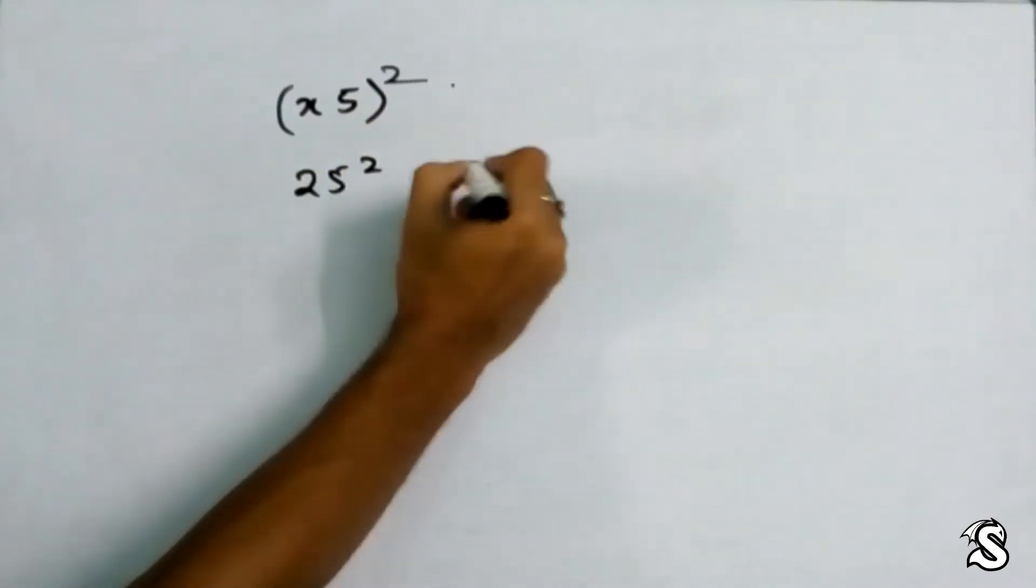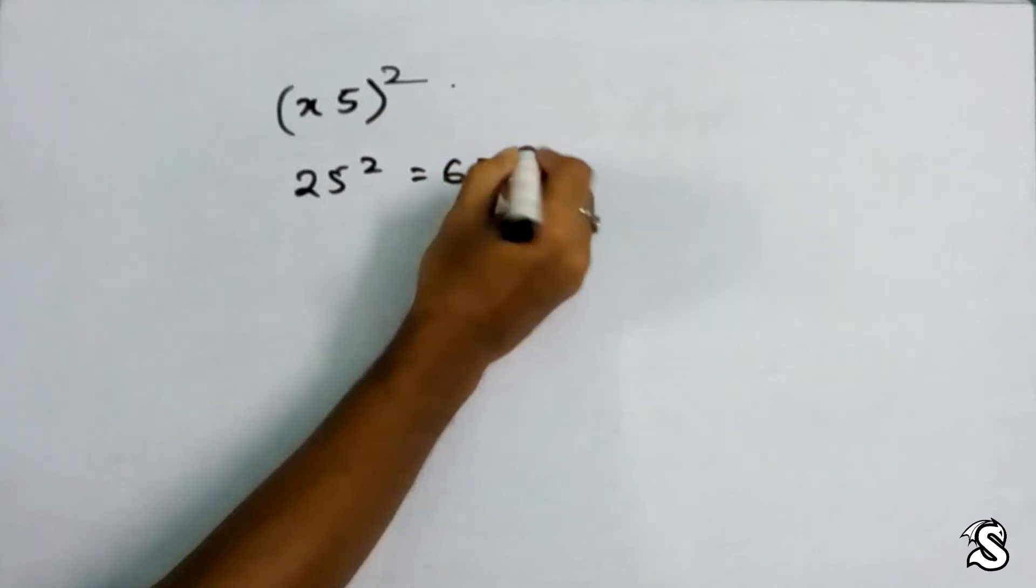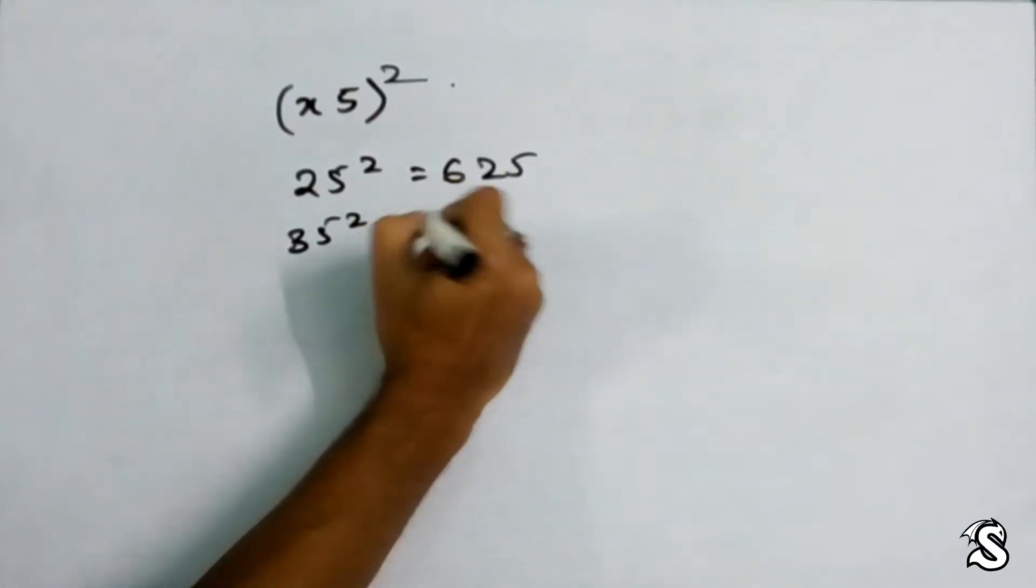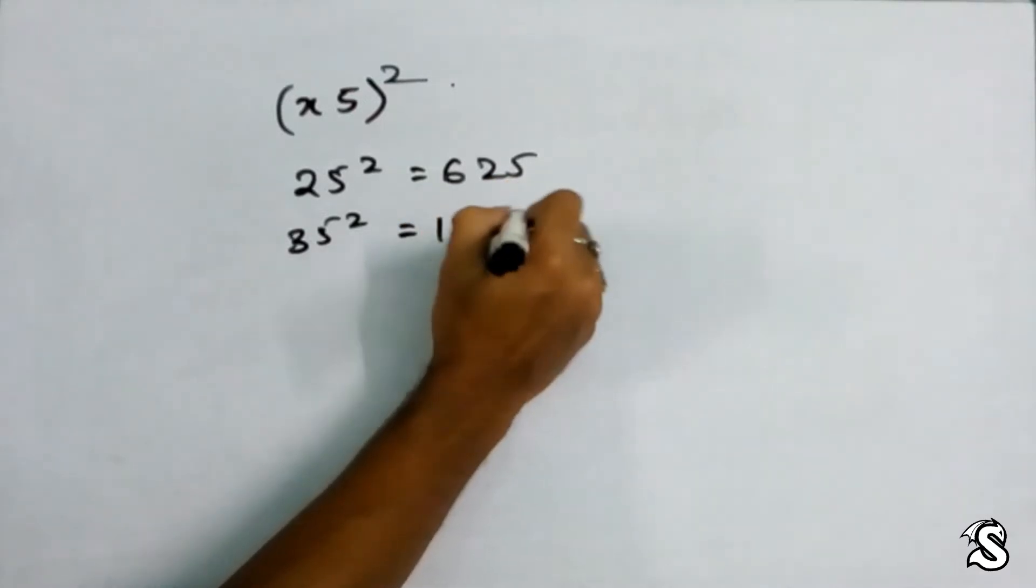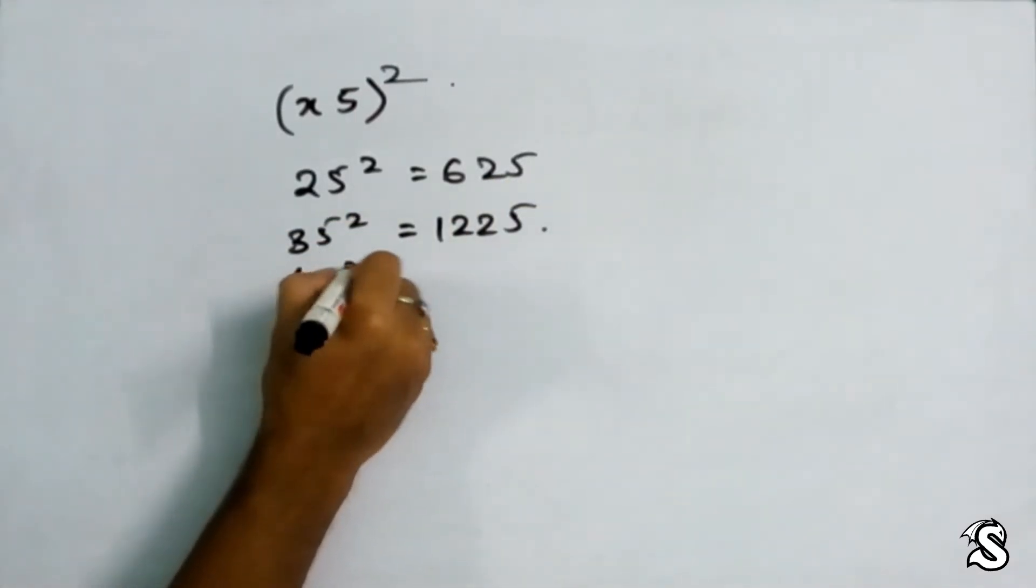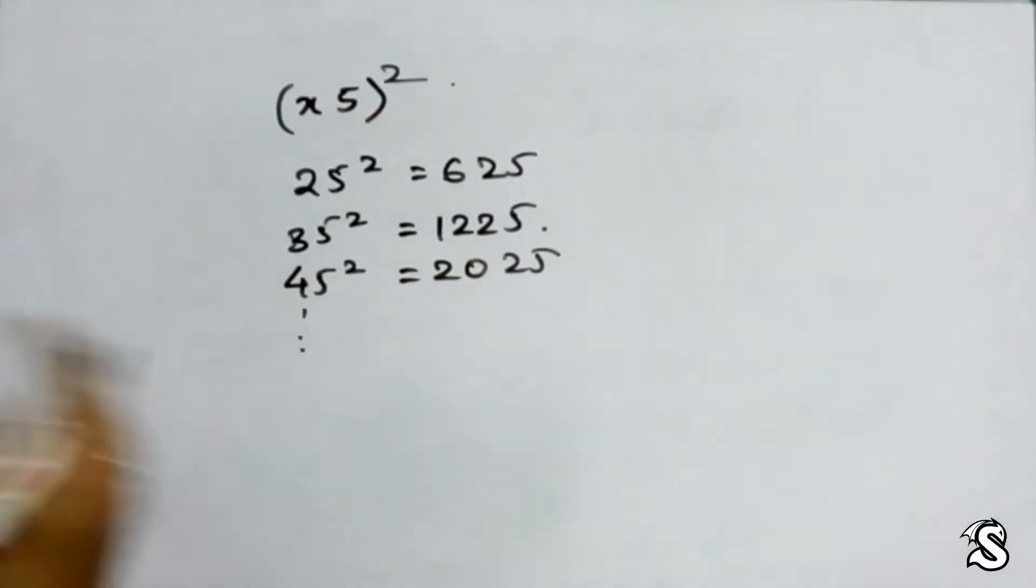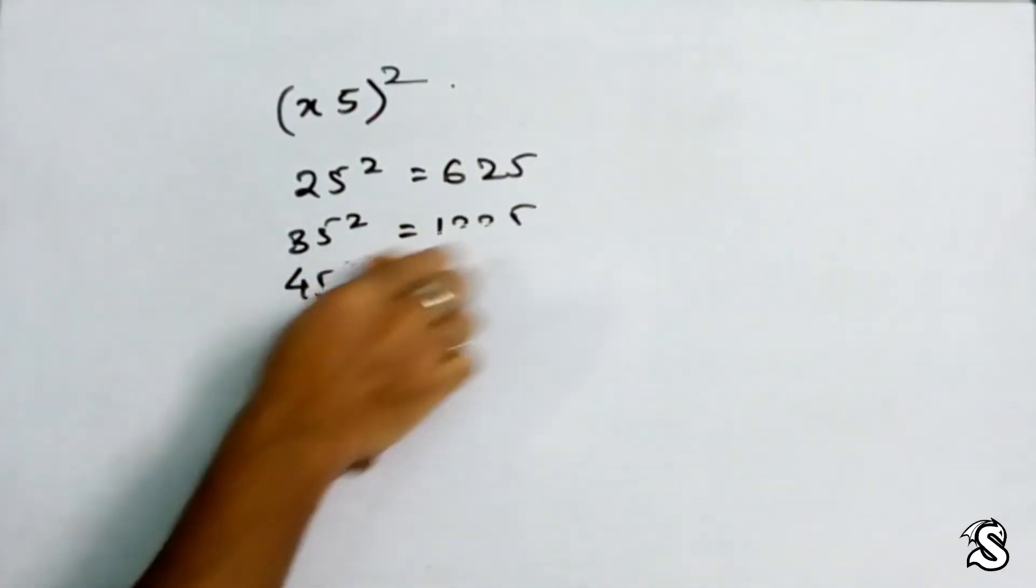I'm going to say 25 square is 625, that is known by most of us. But 35 square, I am going to directly say it is 1225, and 45 square is 2025. I can tell it up to 1005 square, but how I am doing this is the main part.